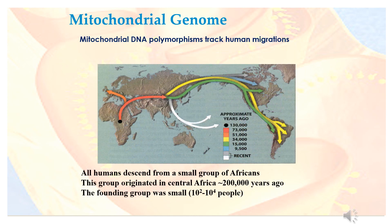Mitochondrial DNA polymorphisms can be used to track human migrations. All humans descend from a small group of Africans who originated in Central Africa approximately 200,000 years ago. The founding group was small, estimated at around 100 to 10,000 people.